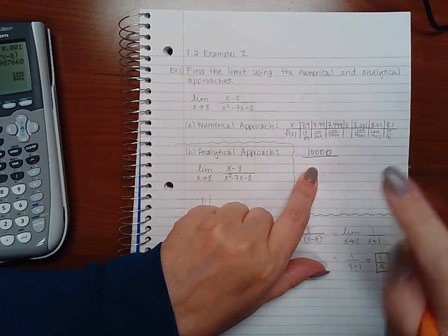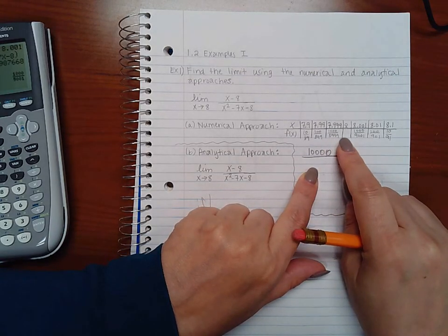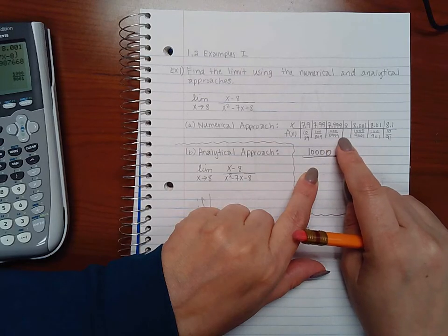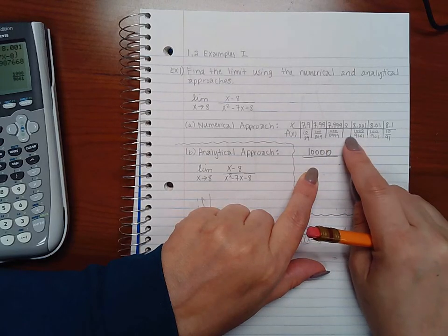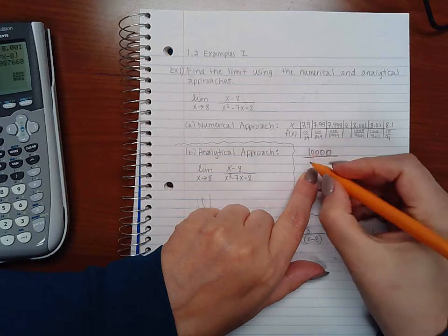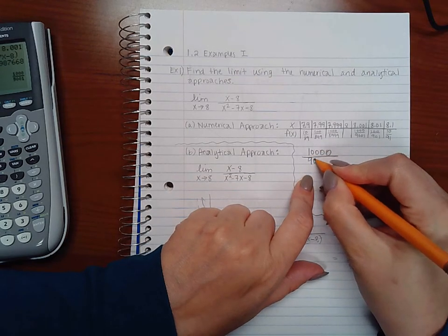However notice that this way was approaching like 9000 but with an extra digit, and this one is approaching 9000 but with an extra digit. So I can assume that this would be 9000 but with an extra digit.